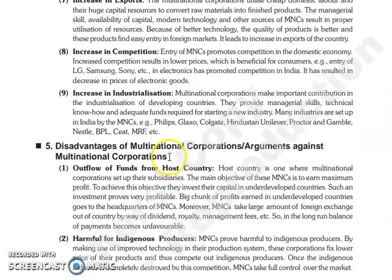The next is increase in industrialization. Multinational corporations jo hain, woh important contribution karti hain in the industrialization of developing countries. Woh provide karti hain managerial skills, technical know-how and adequate funds jo required hote hain for starting a new industry. Aur bohut saari industries hain jo set up India mein hui hain by MNCs, jaise Philips, Glaxo, Colgate, Hindustan Unilever, Procter and Gamble, Nestle, BPL, SEAT, MRF, etc.